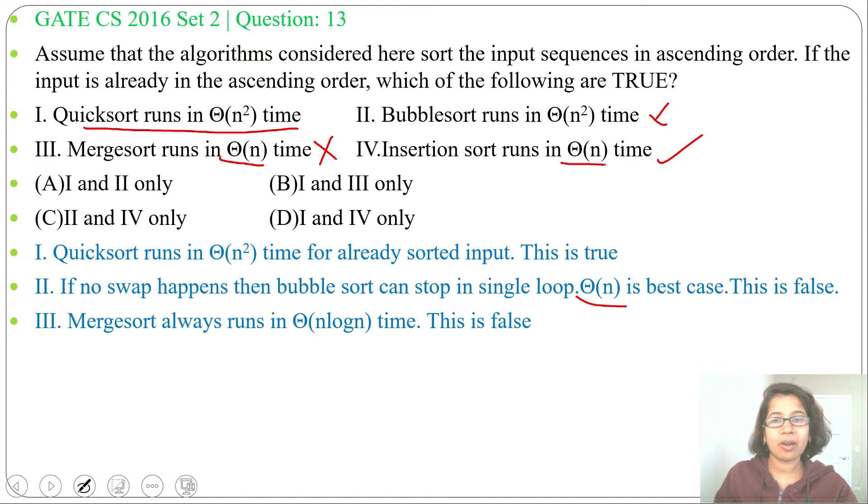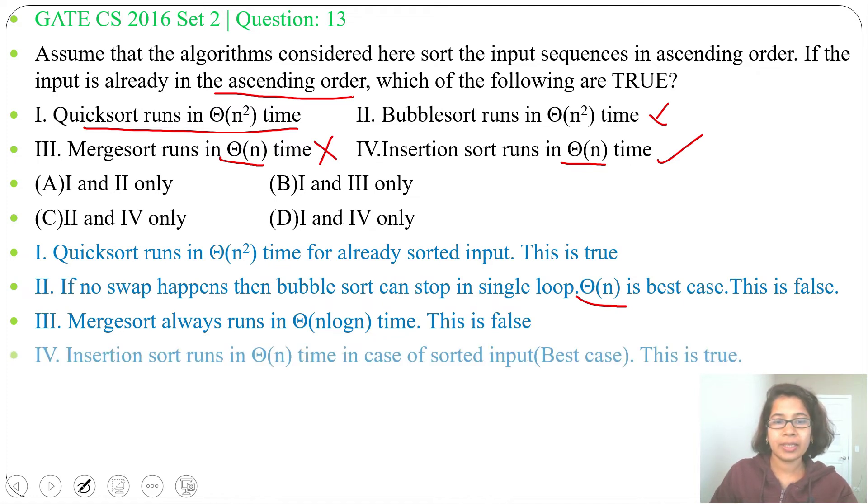While in worst case it runs Theta of n². As the array is already sorted in ascending order, that is best case for Insertion sort and worst case for Quicksort. Insertion sort best case is Theta of n and Quicksort worst case is Theta of n².